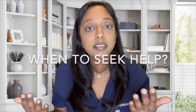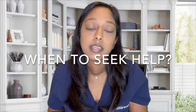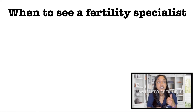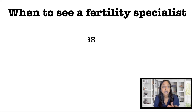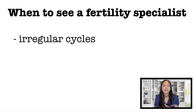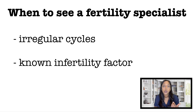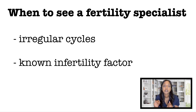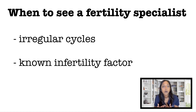The last thing to go over is knowing when to seek help. If cycles are irregular or there is already a known infertility factor — for example, a known male factor, known uterine factor, known tubal factor, endometriosis, or PCOS — you can go ahead and see us.